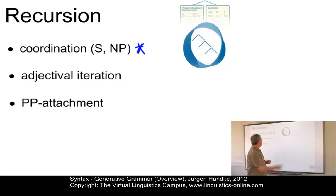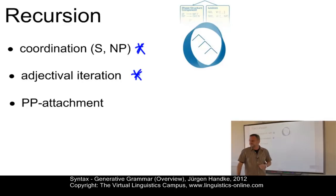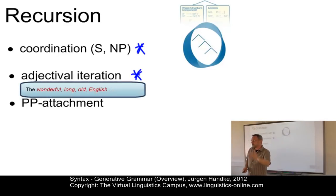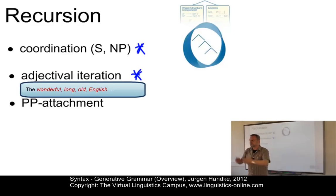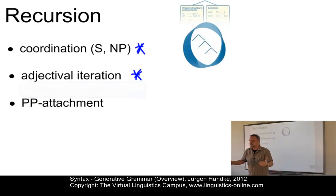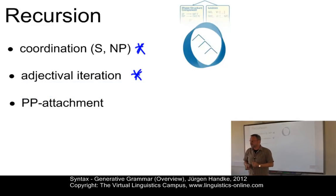Another example is adjectival iteration or recursion. Here you have examples such as 'the wonderful, long, old, English... tail' — four adjectives and even more placed consecutively before a noun.